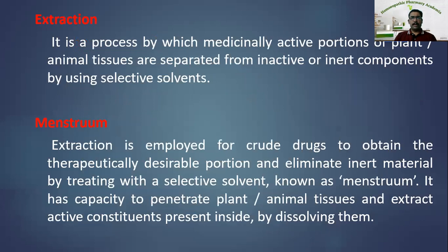There are other forms of preparation such as extraction — a process by which medicinally active portions of plant or animal tissue are separated from inactive or inert components using selective solvents. In homeopathic pharmacy, several methods of extraction are used: simple maceration, percolation, hot percolation, cold percolation, soft solid extraction method, and continuous hot extraction method.